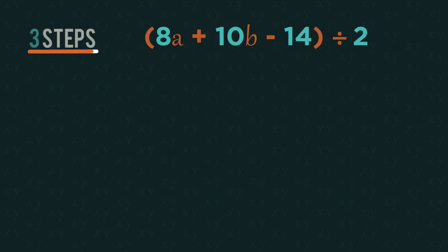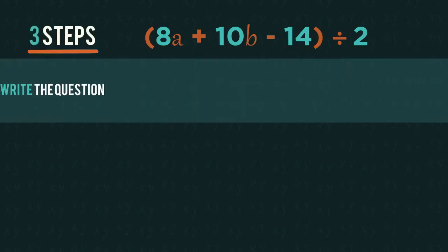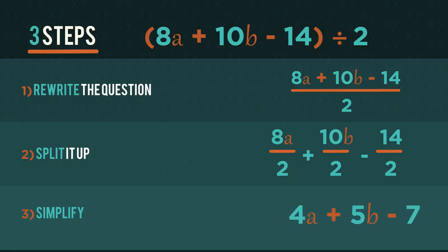So to recap, to divide polynomials by integers or monomials we just need to remember those three simple steps.